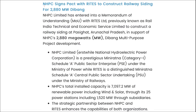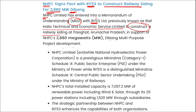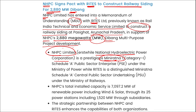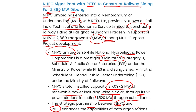NHPC Ltd has signed an MOU with RITES Ltd, previously known as Rail India Technical and Economic Service Ltd, to construct a railway siding at Arunachal Pradesh in support of NHPC's 2,880 megawatt Dibang multi-purpose power project. NHPC Ltd, or National Hydroelectric Power Corporation, is a Mini-Ratna company with a total installed capacity of 7,097.2 megawatt of renewable power through its 25 power stations. This strategic partnership between NHPC and RITES will enhance the capabilities of both organizations.